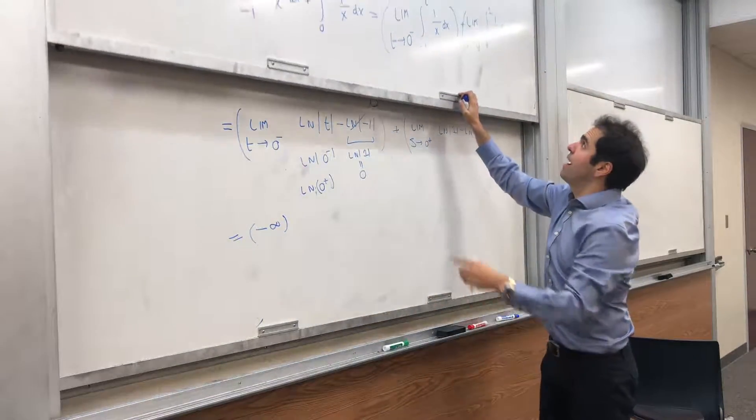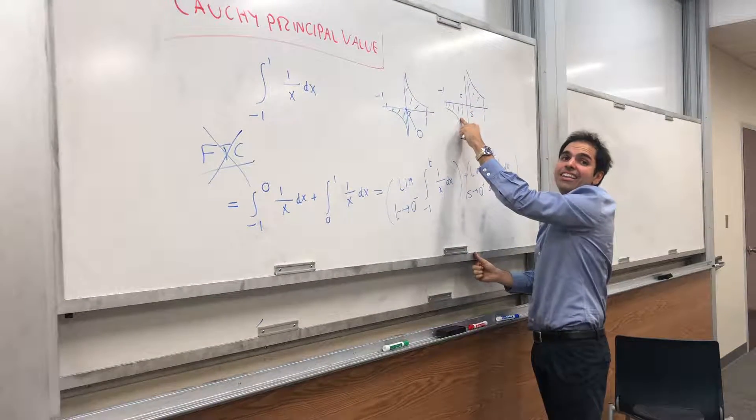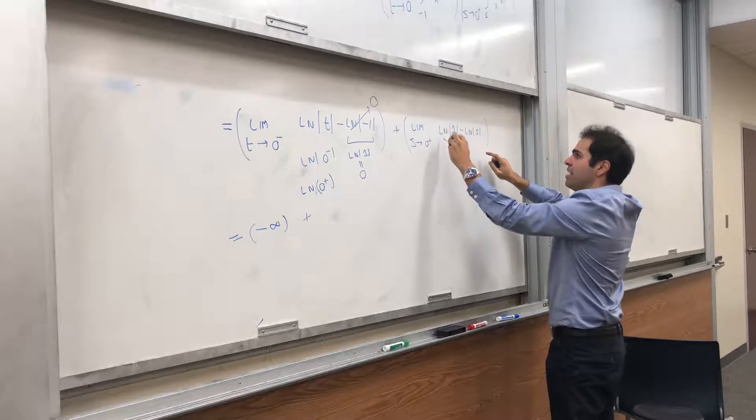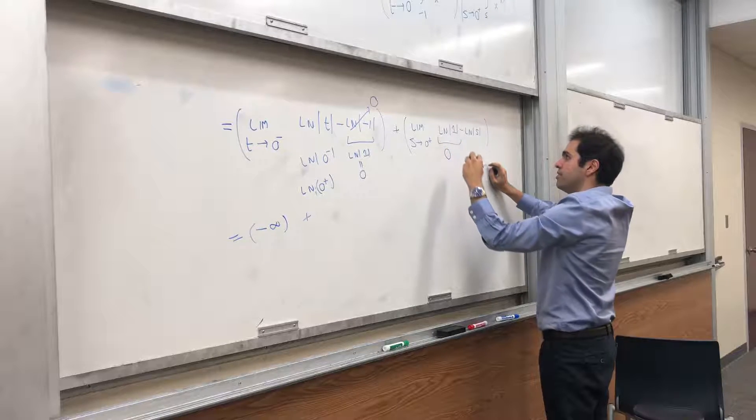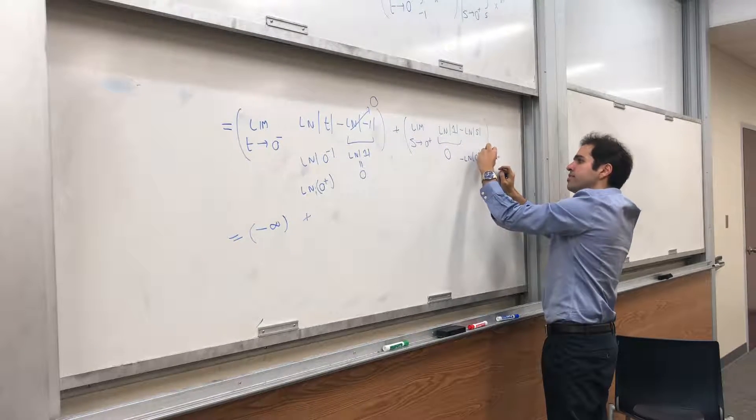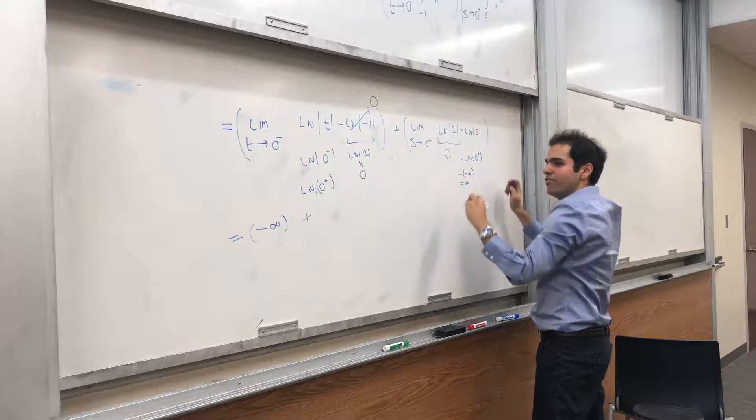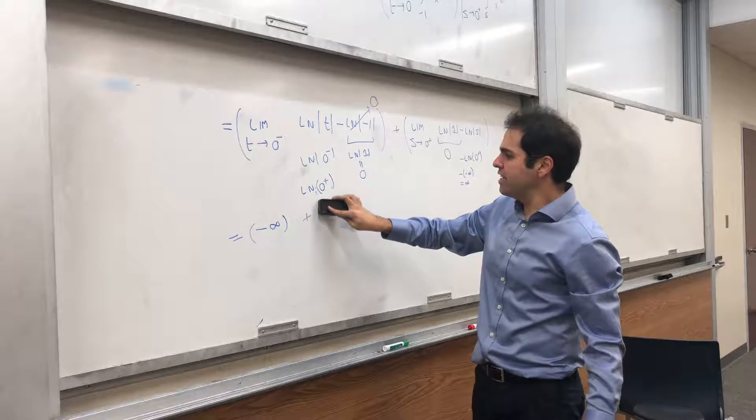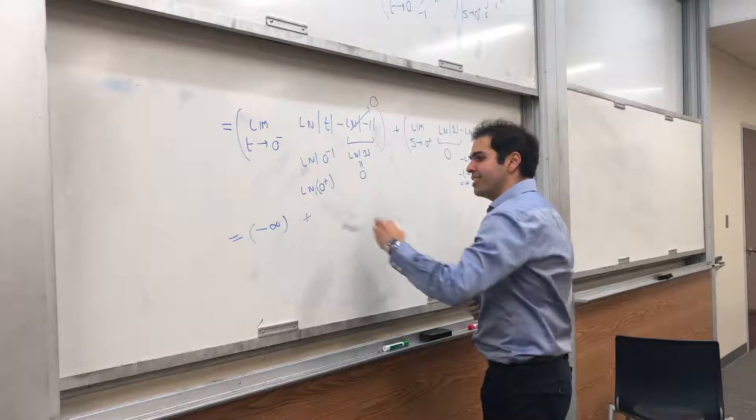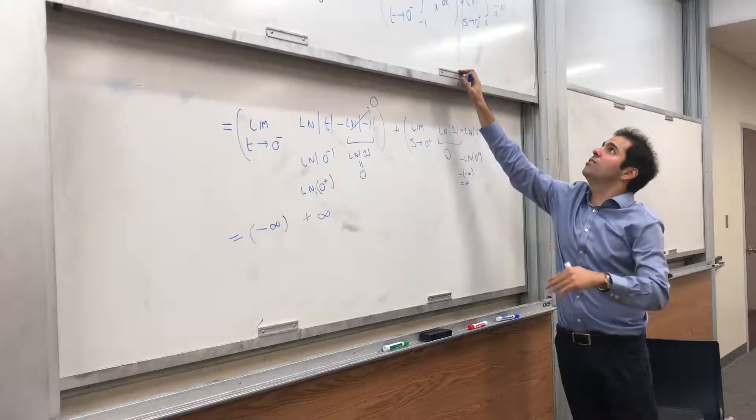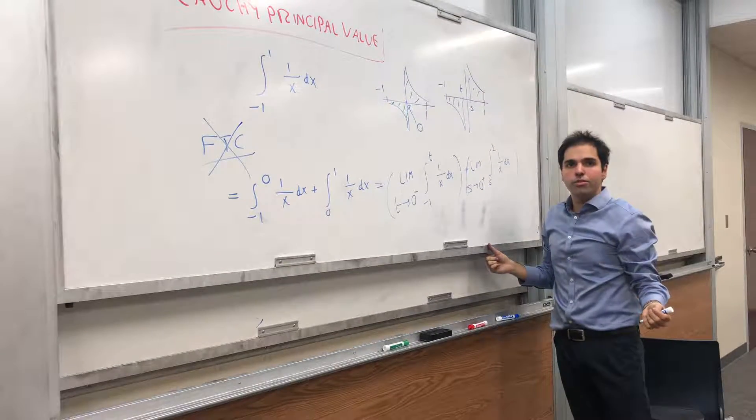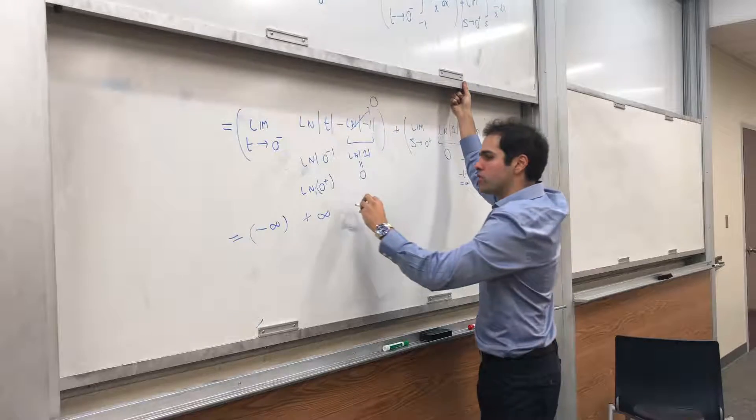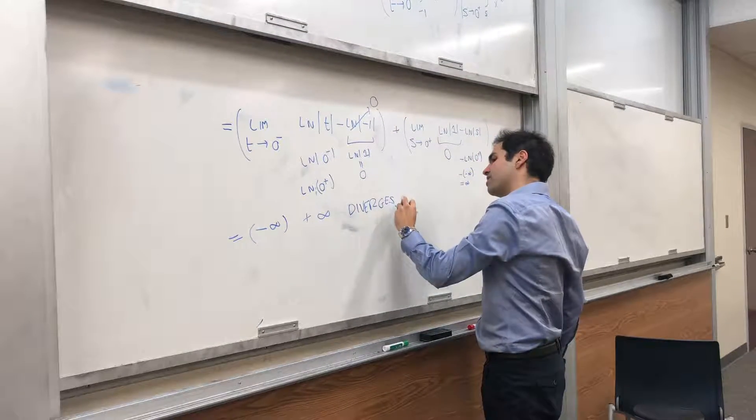So the first part is minus infinity, which makes sense because this thing is negative. So if you find plus infinity, it's a problem. And the second part, even easier, ln of 1 is 0. And then we get minus ln of 0 plus, which is minus minus infinity, which becomes infinity. So the improper integral here is minus infinity plus infinity. And in calculus, you learn that minus infinity plus infinity, you conclude that this improper integral diverges. Basically, you cannot add those two up because this is minus infinity and this is infinity. So you would just conclude diverges.